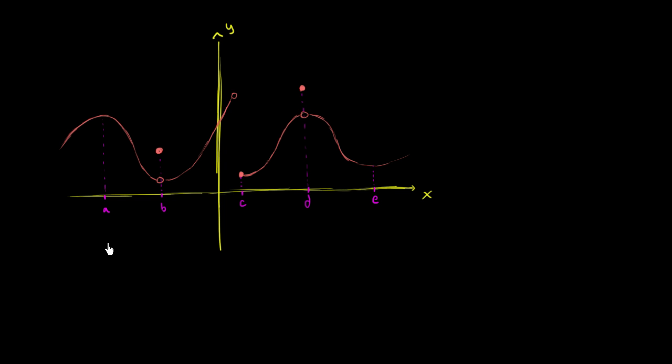So what we want to think about is at what x values does our function here in orange - this is the graph of y equals f of x - at what x values, and we have some choices here, at which of these x values does f of x hit relative maximum values or relative minimum values? I encourage you to pause the video and think about it and classify whether we hit a relative maximum value or relative minimum value at each of these x's.